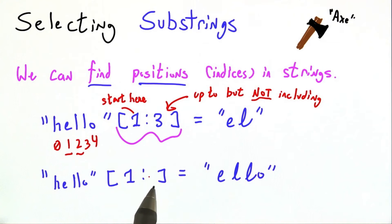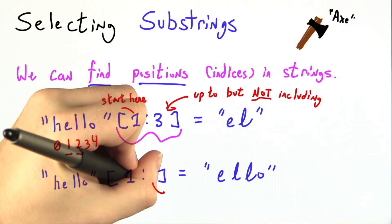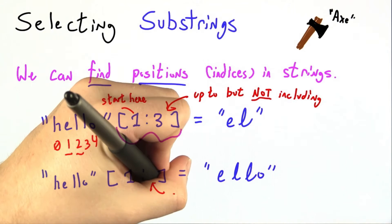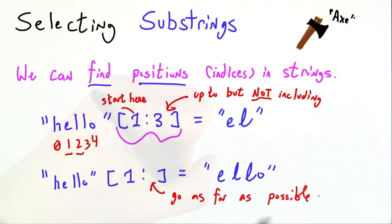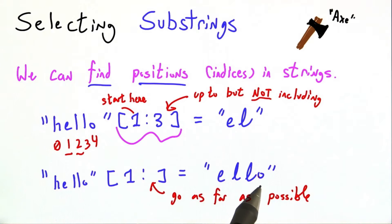You can also leave out one of these number specifiers, and leaving it blank means go as far as possible in that direction. So here we're starting at position 1 and going all the way to the right, so we get hello.